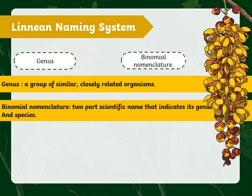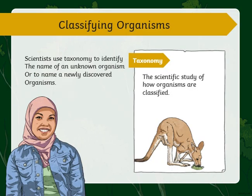After the Linnaean naming system, we classified the organisms using taxonomy, which is the scientific study of how organisms are classified.